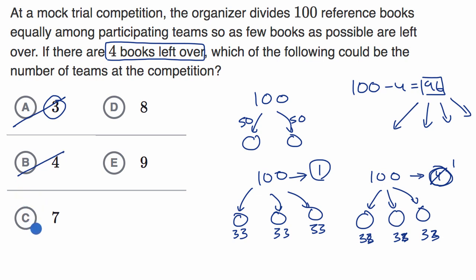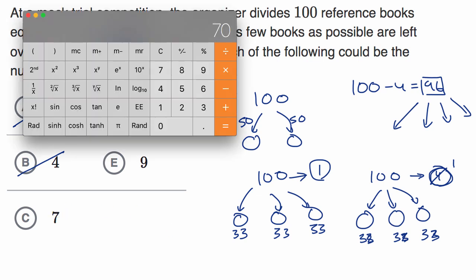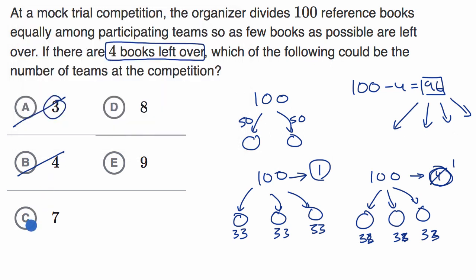Now what about choice C? Well, 96 is not divisible by seven. You could use a calculator to verify that if you like. If you just say 96 divided by seven, it's not cleanly divisible by seven. Notice we get 13 point something here, so I'll rule out seven.